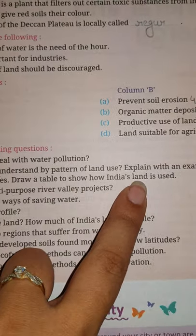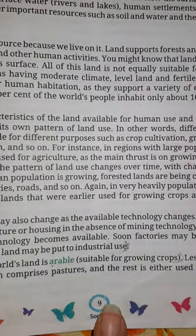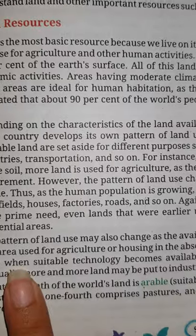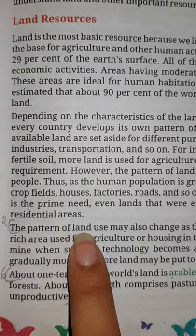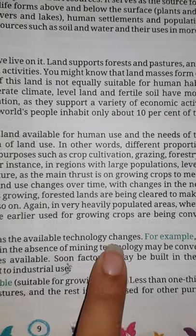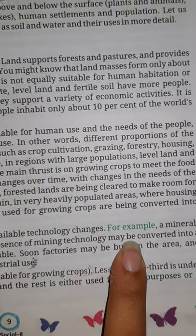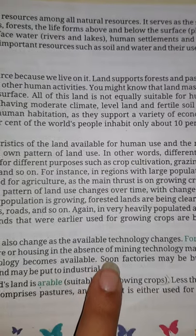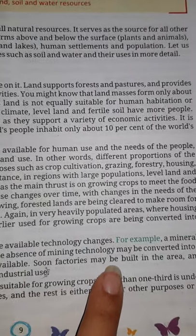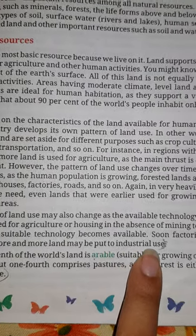Draw a table to show how India's land is used. Your answer is given on page number 9, fourth paragraph. The pattern of land use may also change as available technology changes. For example, a mineral-rich area used for agriculture or housing in the absence of mining technology may be converted into a mine once suitable technologies become available. Soon factories may be built in the area and gradually more and more land may be put to industrial use.